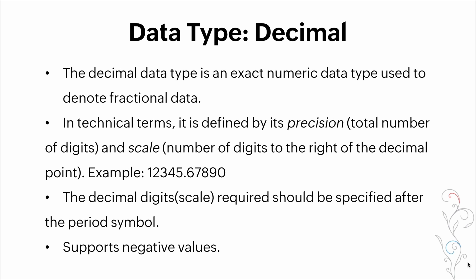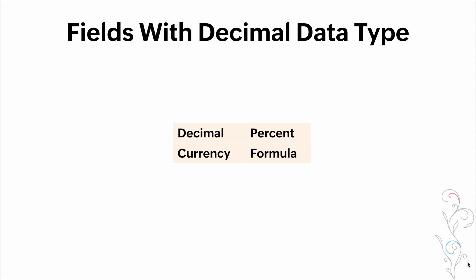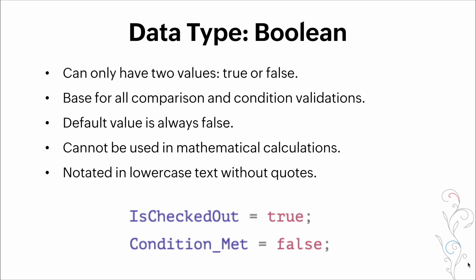Our next data type is a decimal data type. This decimal data type is an exact numeric data type used to denote fractional data. In technical terms, it is defined by its precision. Here's an example: the decimal digits required should be specified after the decimal point. This data type also supports negative values. Here are some examples and these are some of the fields with decimal data type: decimal, currency, percent, formula.